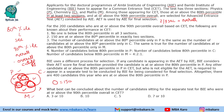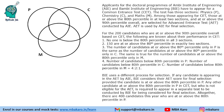Let us draw this Venn diagram and fill in these conditions. No value appears outside the three circles. 150 are at or above 80th percentile in exactly two sections, so those three regions add to 150. The fourth condition says: candidates below 80th percentile in P, ratio below 80th in C, ratio below 80th in M is 4:2:1.